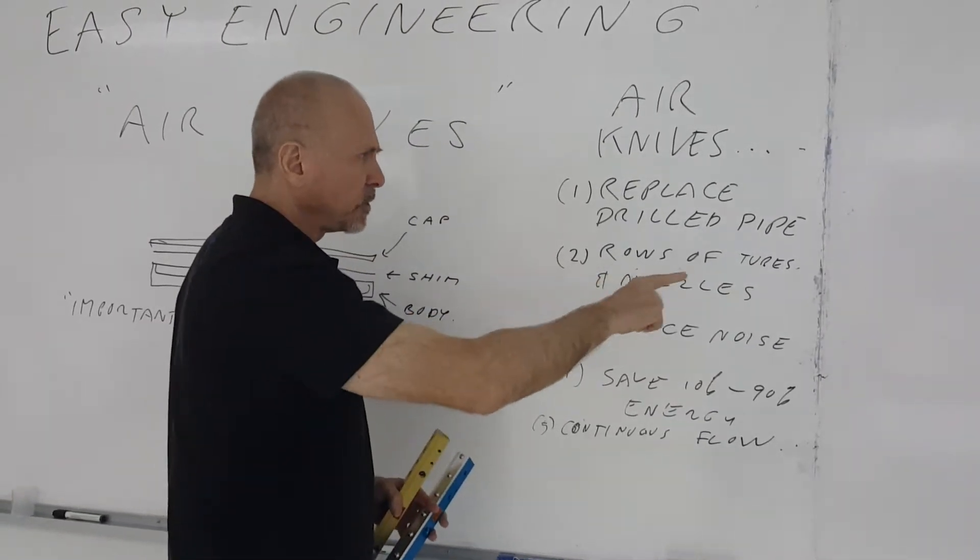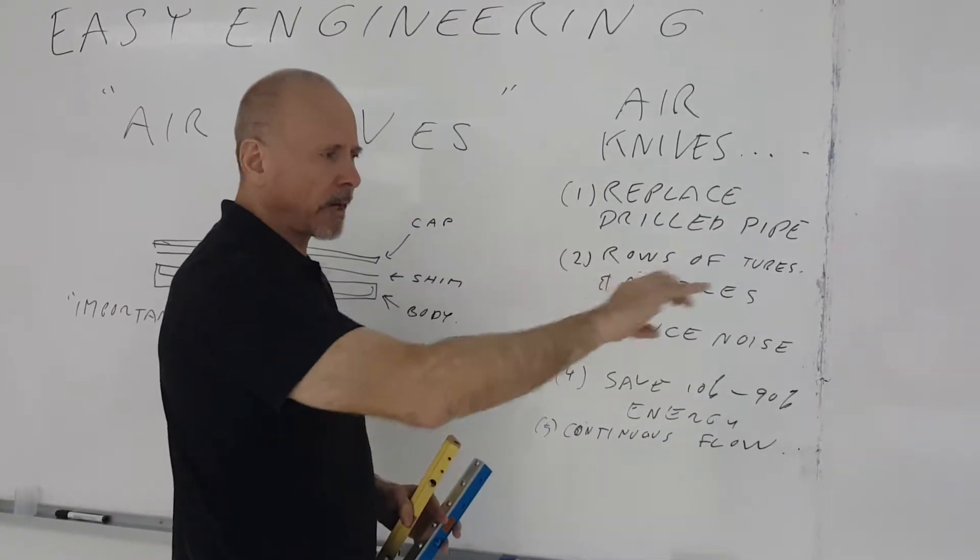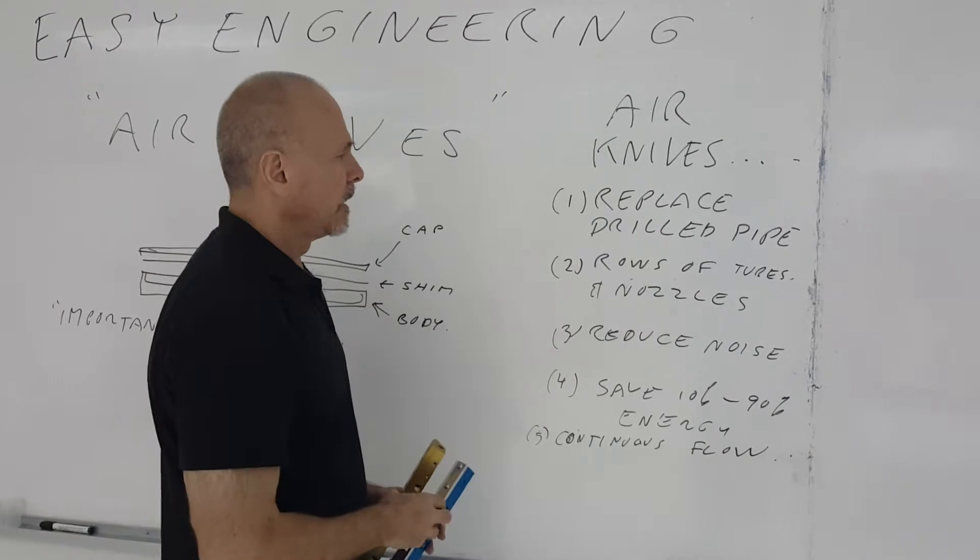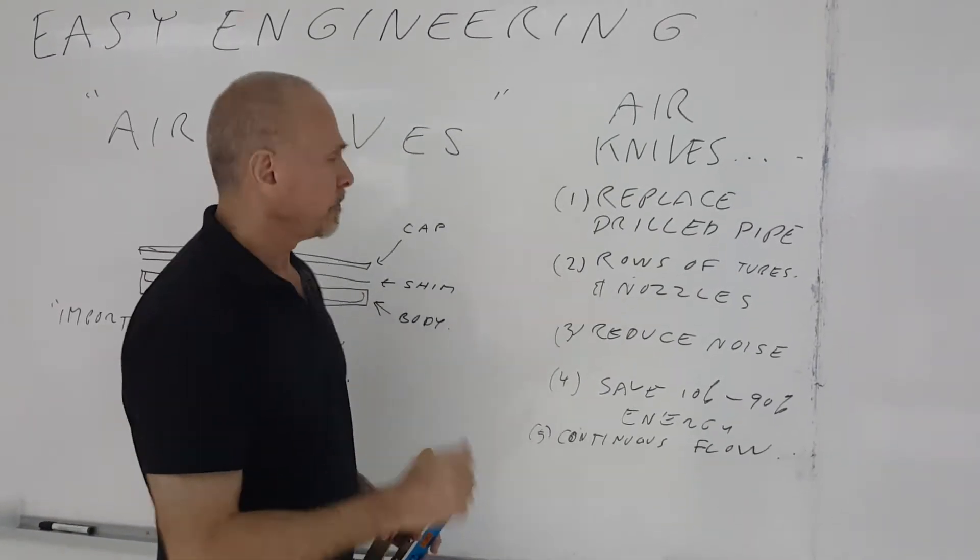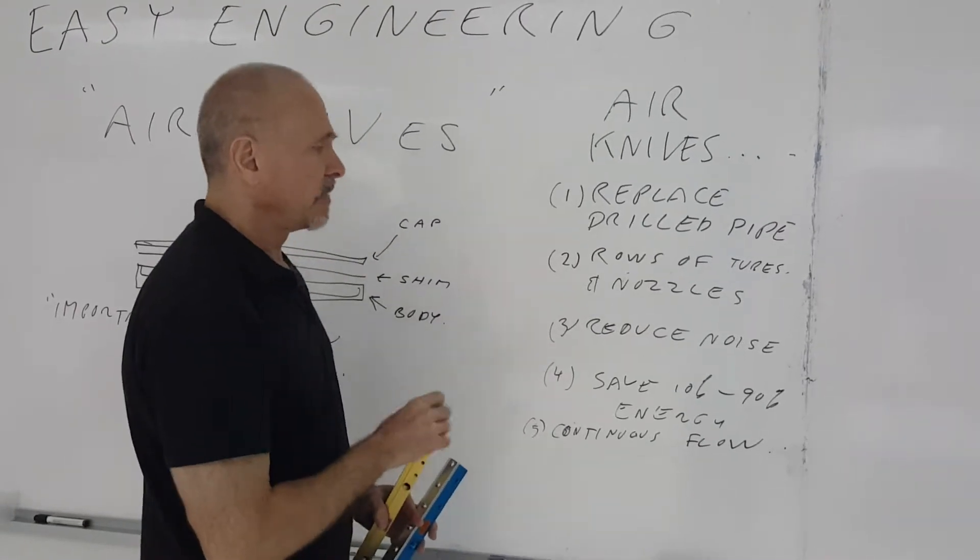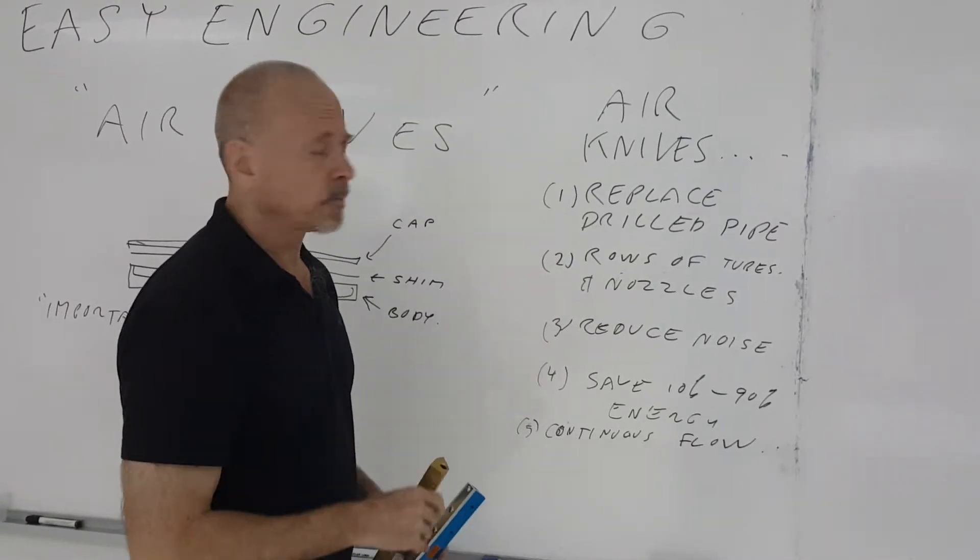It can replace rows of tubes or nozzles on the end of a pipe or along a pipe or on a manifold. Air knives reduce noise levels dramatically and they can save anywhere from 10% to 90% of energy used if you're using compressed air.